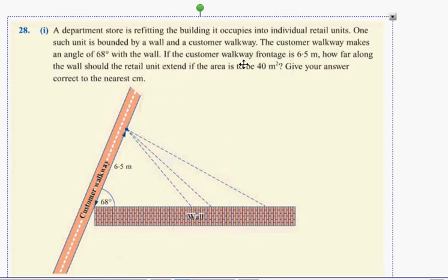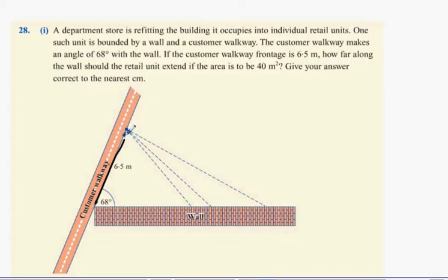So, department store is refitted into a building that occupies an individual retail unit. It's bounded by a wall, so you can basically see your wall here. We don't know how far to go along this line here. This line here is uncertain.